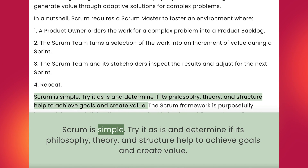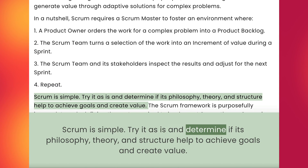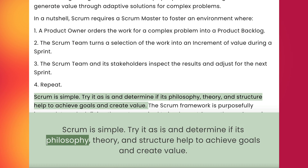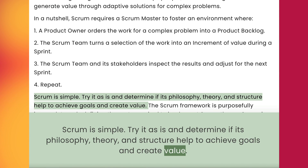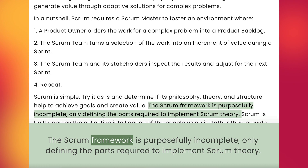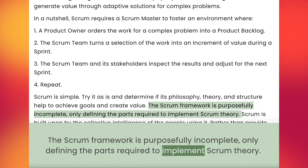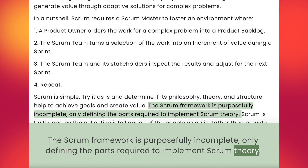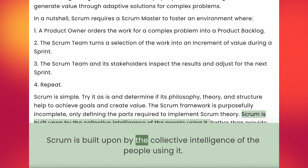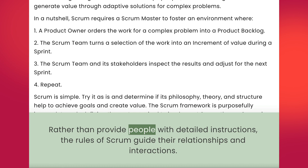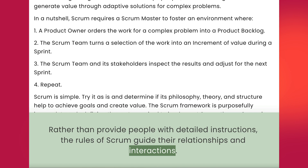Scrum is simple. Try it as is and determine if its philosophy, theory, and structure help to achieve goals and create value. The Scrum framework is purposefully incomplete, only defining the parts required to implement Scrum theory. Scrum is built upon by the collective intelligence of the people using it. Rather than provide people with detailed instructions, the rules of Scrum guide their relationships and interactions.